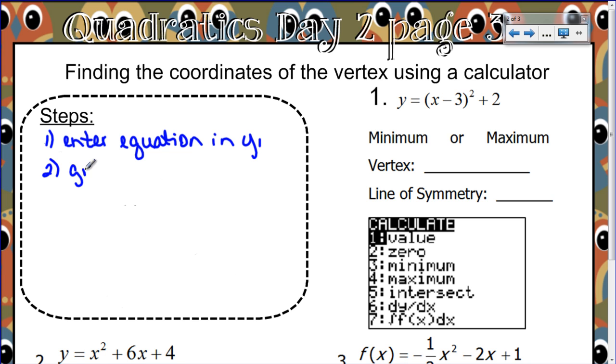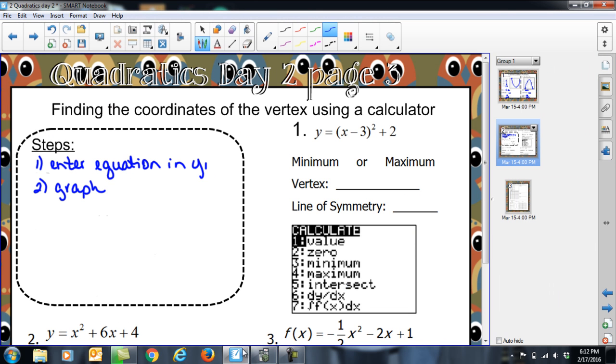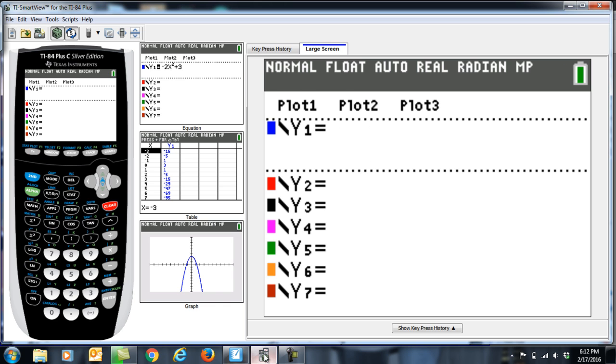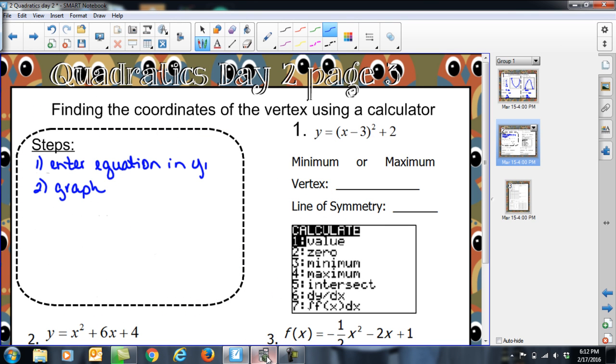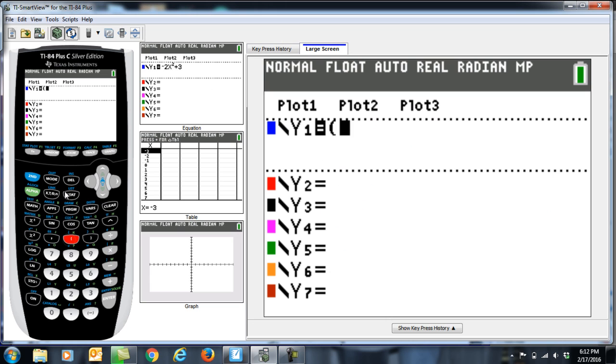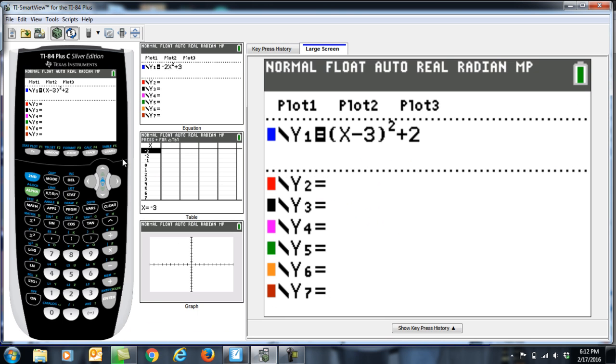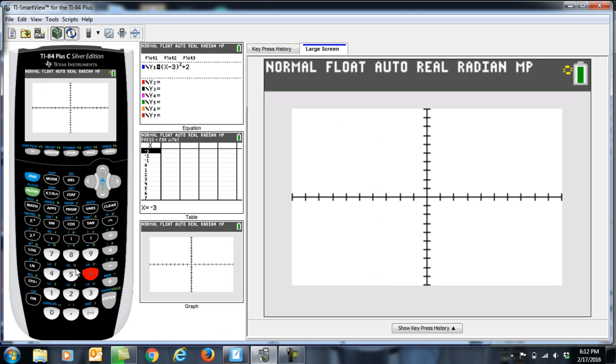Step two, graph it. Let's take care of those two steps. We're going to go back to y equals, and my equation this time is the quantity x minus 3 squared plus 2. So there's my function. I'm going to press zoom and 6 to graph it in a standard window.